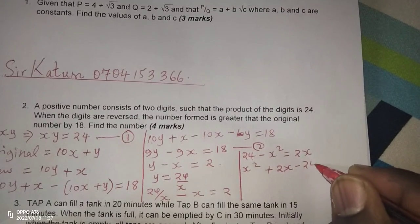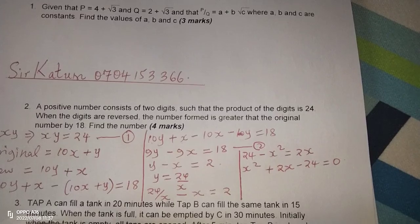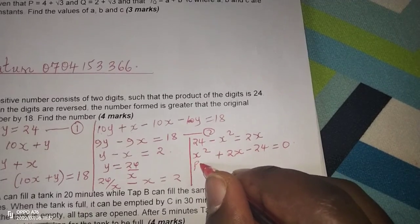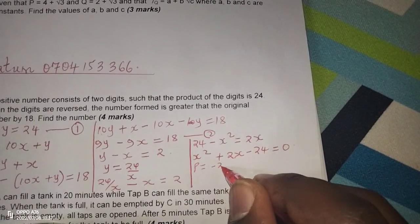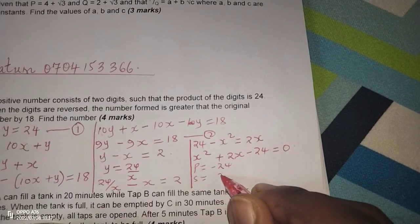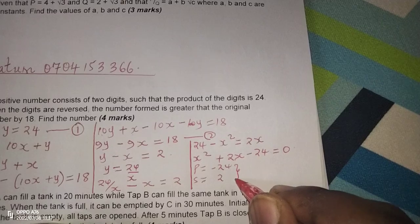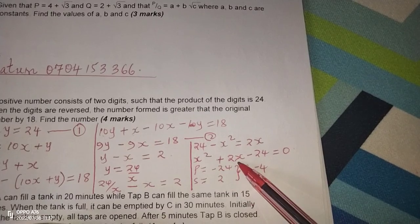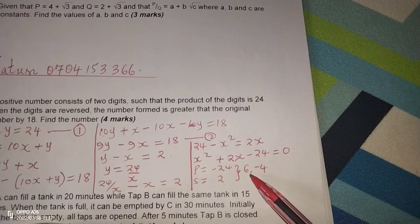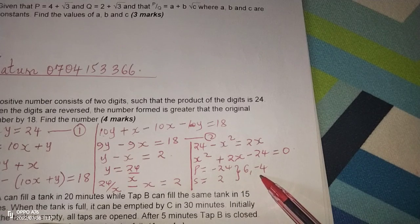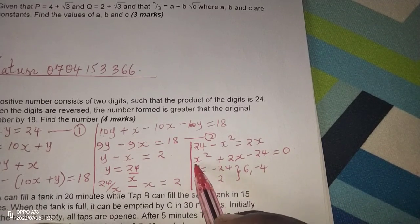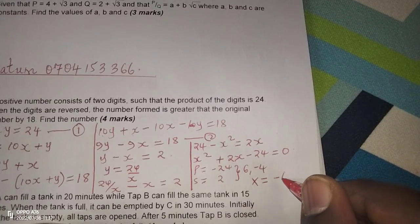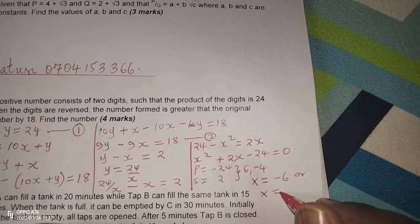So now we solve this quadratic equation using the factorization method, whereby we need a product of 1 times negative 24, which is negative 24, and a sum of 2. So the two numbers are 6 and negative 4. When we factorize and substitute 2X with 6X and negative 4X, then we factorize, we realize X is going to be either negative 6 or X equals 4.